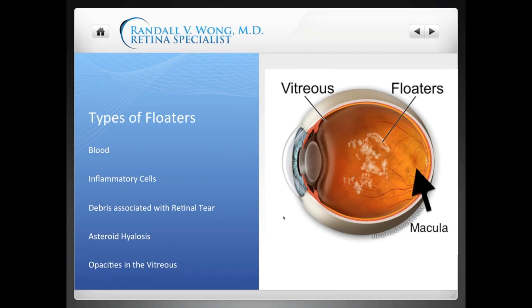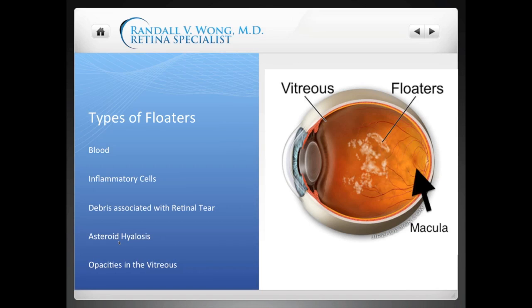Floaters are a generic term for basically anything that you see moving in your eye. They can be blood — certain diseases may cause bleeding into the vitreous. Certain eye conditions can cause inflammation, something called vitritis, which is very similar to arthritis in the eye, where you'd be seeing inflammatory cells. There are systemic arthritic conditions where inflammation intermittently occurs in the eye. If you develop a tear in your retina, you could get floaters from either blood or cells from underneath the retina. A common condition called asteroid hyalosis can sometimes also cause patients to see floaters.